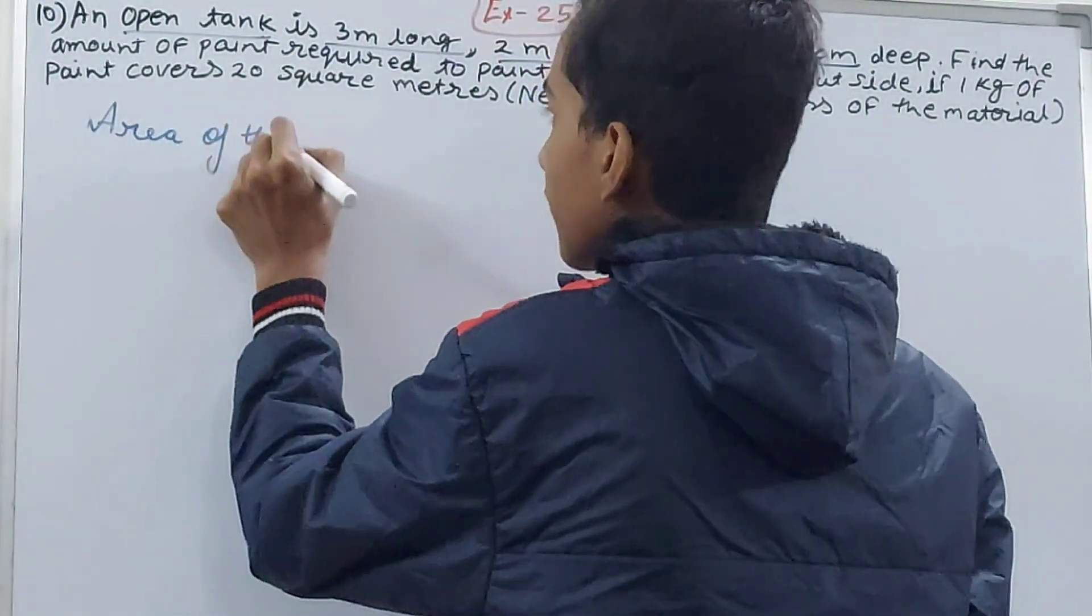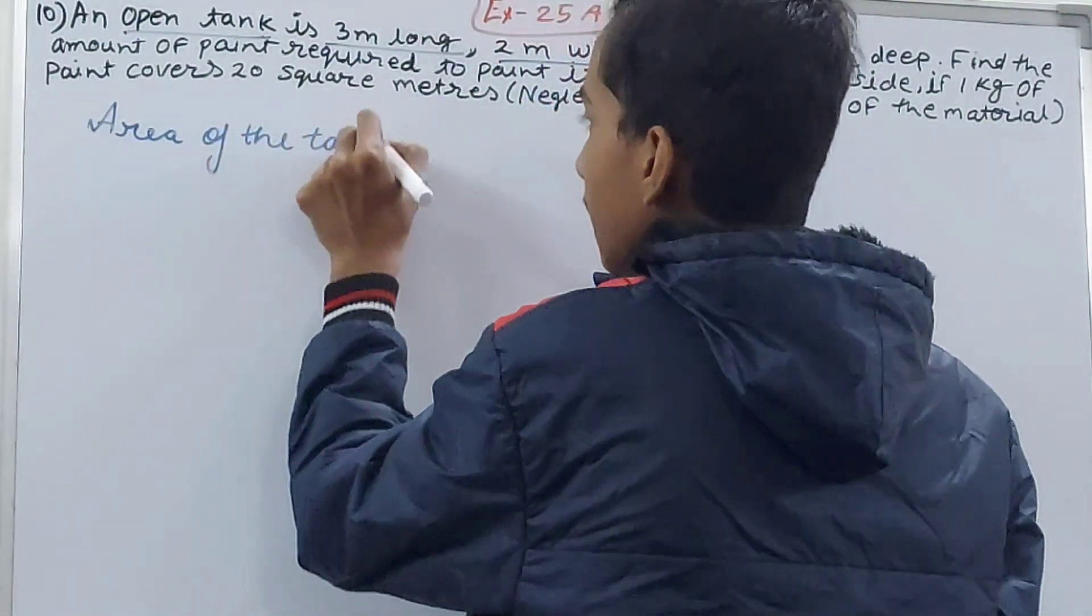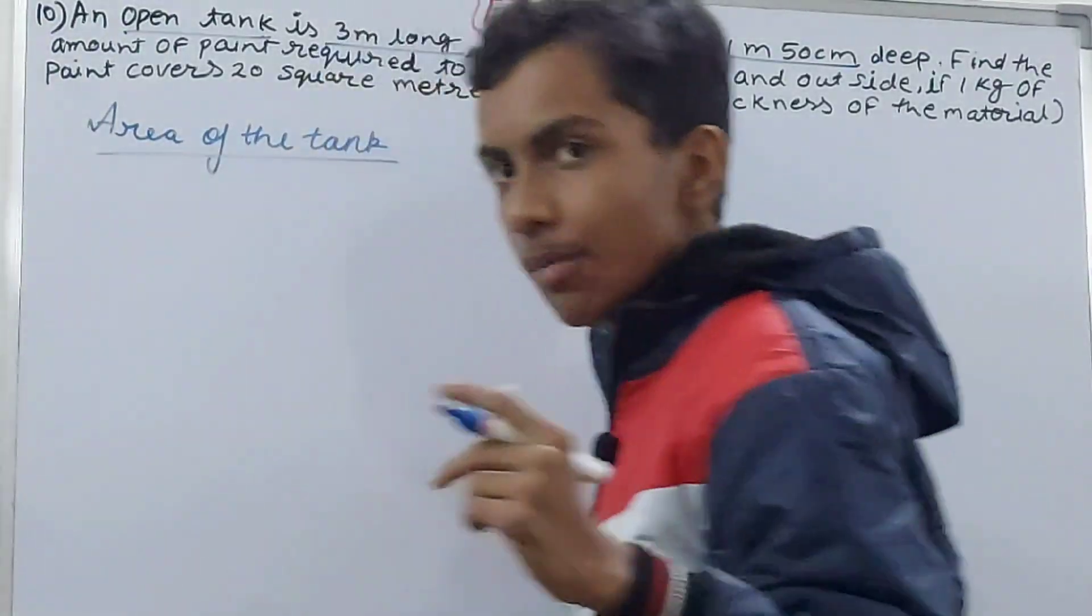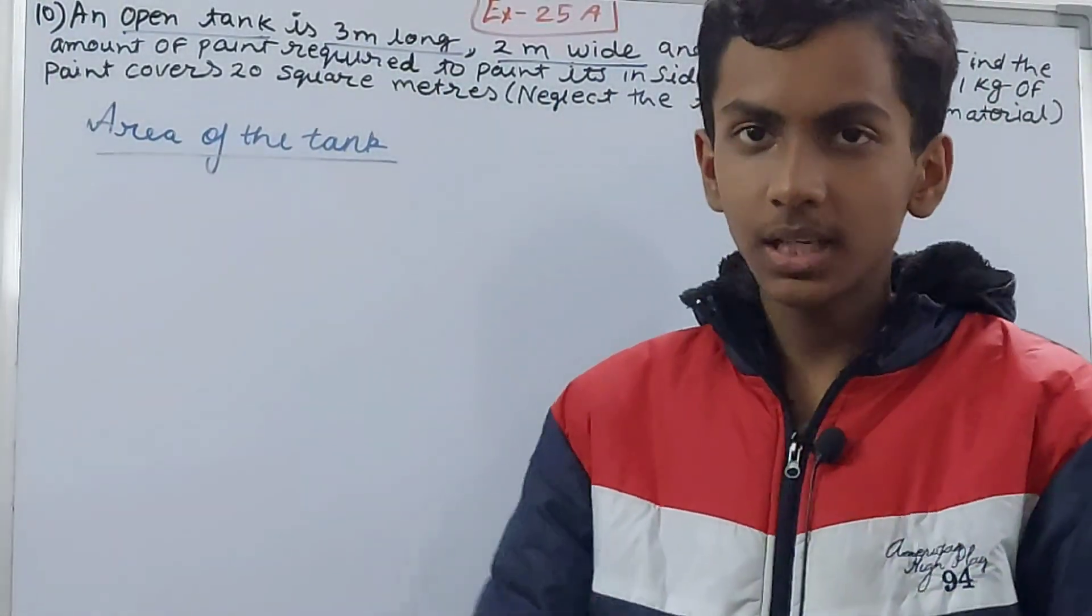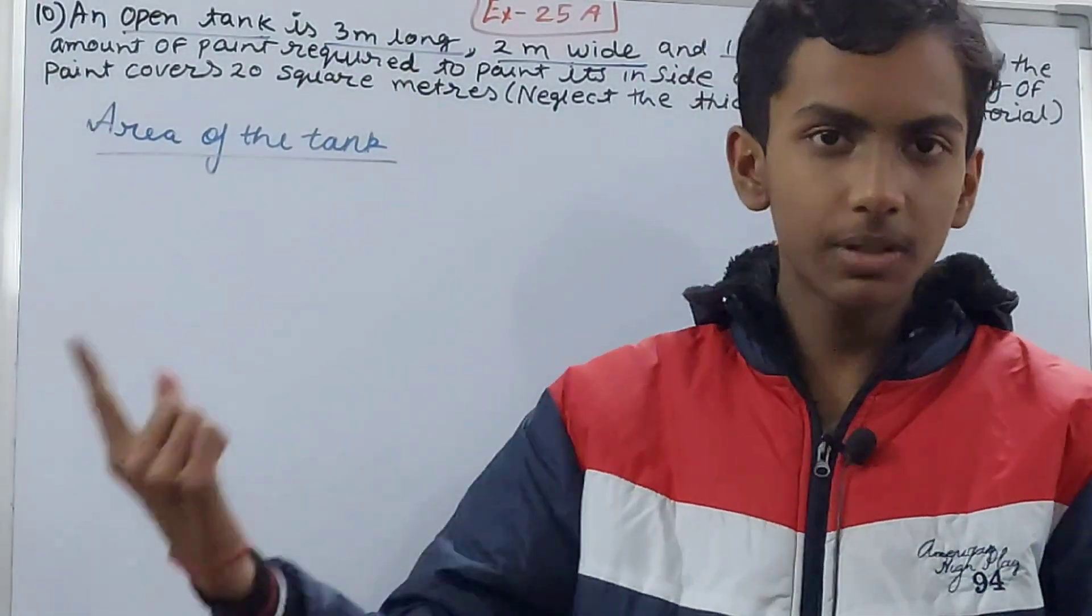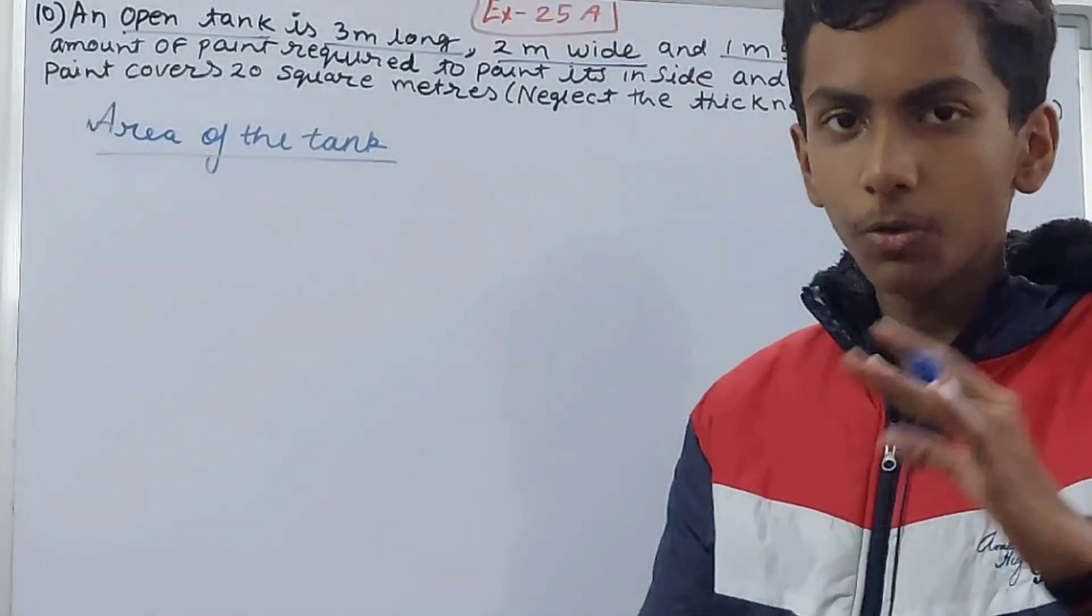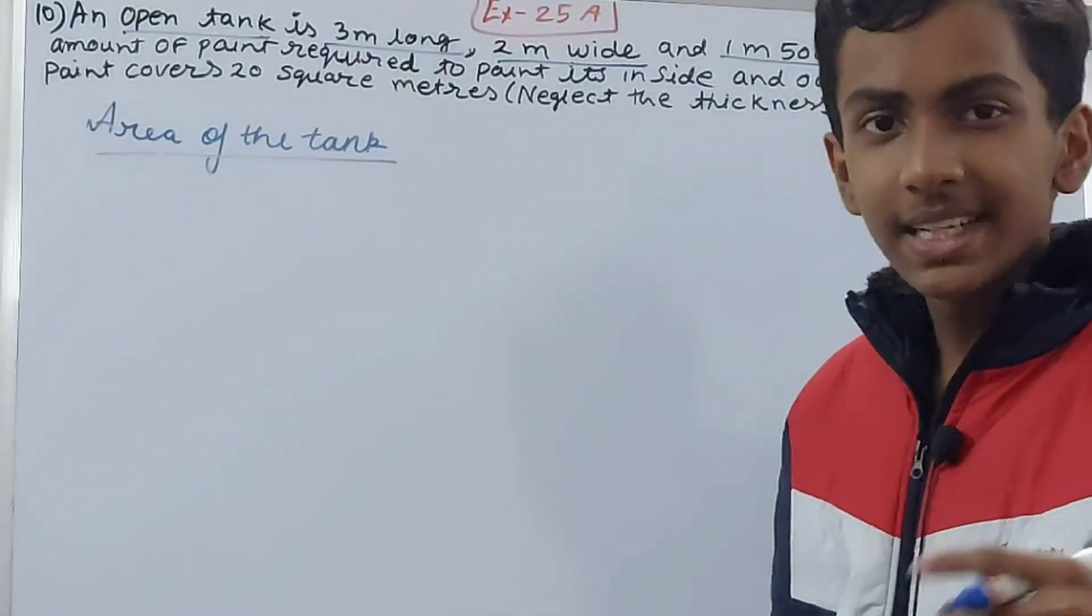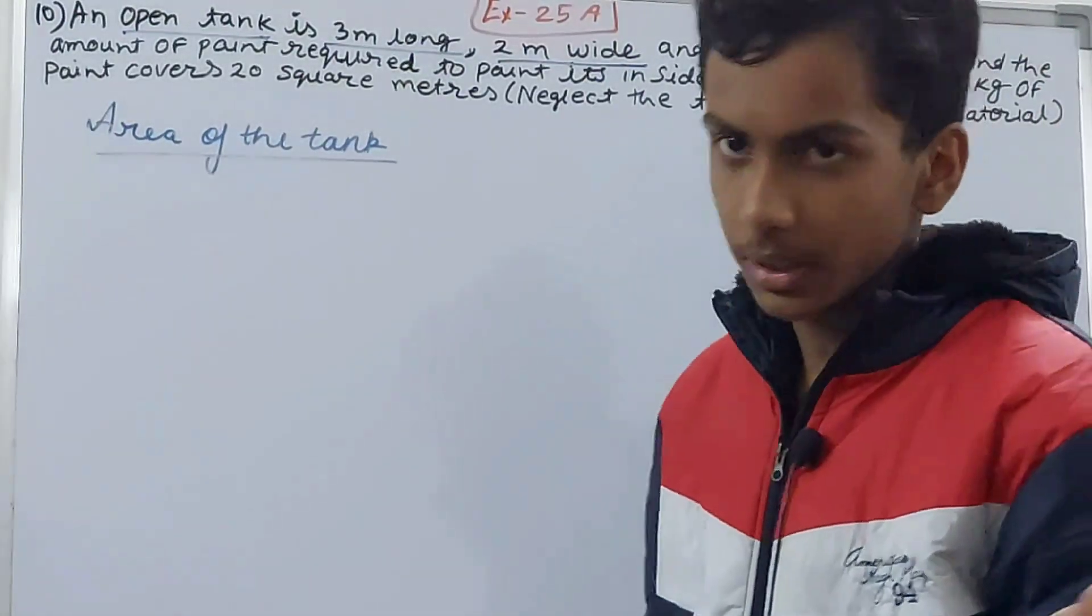So what I will do is I will calculate the area of the tank, the entire area. Since my tank has how many sides? I said before it has five sides. You can see, take example of your room: one in front of you, one behind you, one to the right, one to the left - so four - and one floor. Since it's an open tank, ceiling is not there.